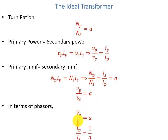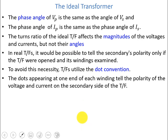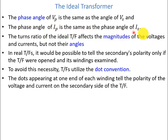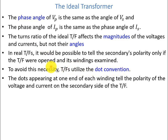In terms of phasors, VP over VS equals a and IP over IS equals 1 over a. The phase angle of VP is the same as the phase angle of VS, and the phase angles of primary and secondary currents are also the same. The turns ratio of the ideal transformer affects the magnitudes of voltages and currents but not their angles. In real transformers, we would need to open the transformer and examine its windings to know the secondary polarity — to avoid this, transformers use the dot convention.